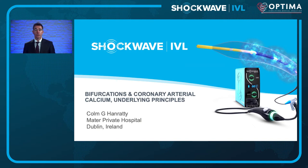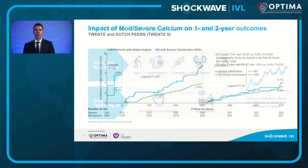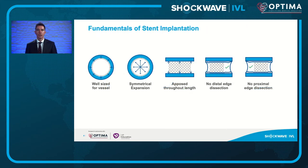I'm going to talk today about bifurcations and some underlying principles. You're well aware that the need for calcium modification is likely to continue to grow in the future. In the presence of calcification, coronary interventions do less well, and you get much greater target vessel failure in the presence of moderate to severe calcification. These would be the fundamentals of stent implantation in a non-bifurcation scenario.